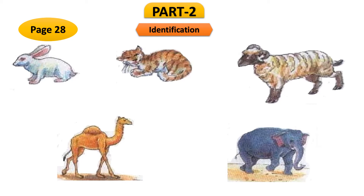From the left, in the top part, we have a white color animal which is known as rabbit. Next to it is a very familiar animal — the cat. On the right, there is another white animal that is very popular in winter-based countries because we get wool from it. The name of this animal is sheep.